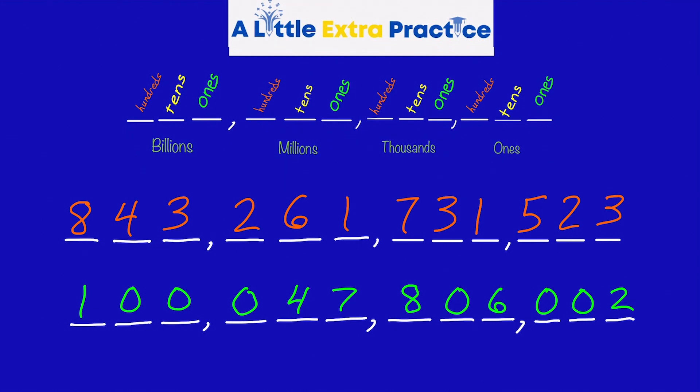Let's go ahead and start off. We'll say the number in the period followed by the name of the period: 843,261,731,523.